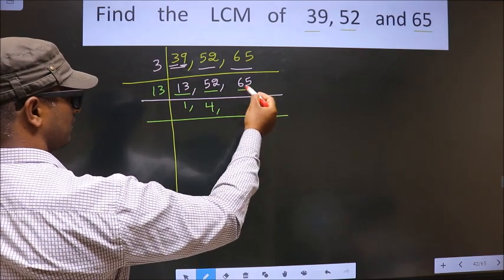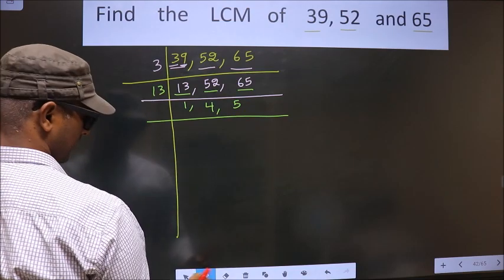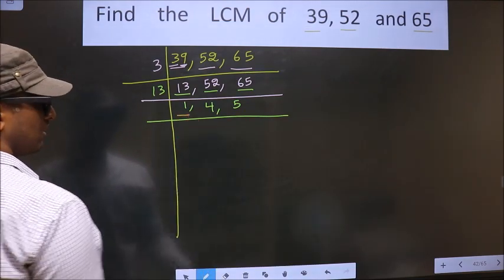Next number is 65. When do we get 65 in the 13 table? 13 fives is 65. Now here we got 1.